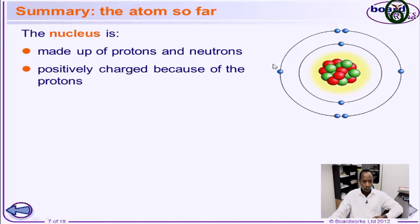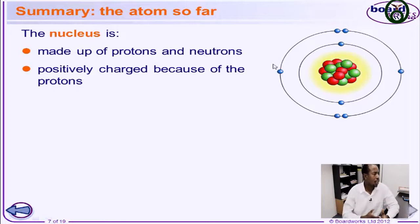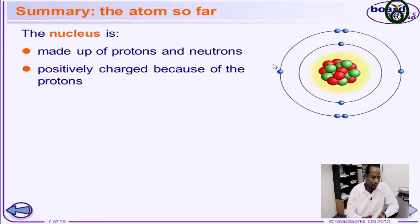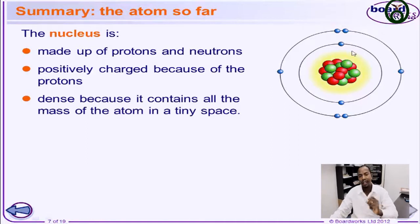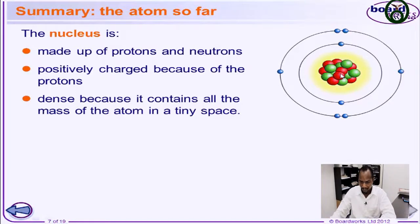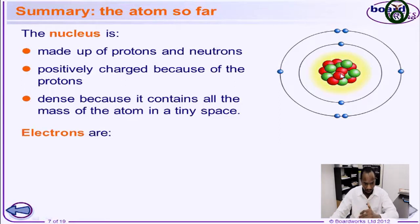The nucleus is positively charged. Why? Because it's made up of protons, which are positively charged. The neutrons have no charge, therefore the only charge found in the nucleus is the positive charge. The nucleus is dense because it contains all the mass of the atom in a tiny space — it is seriously dense.